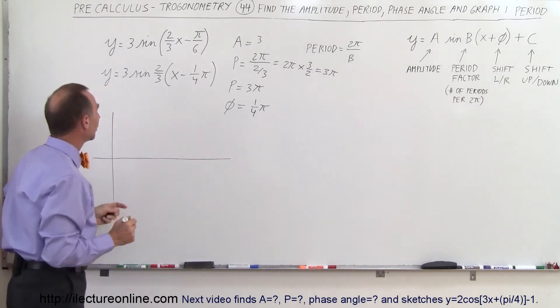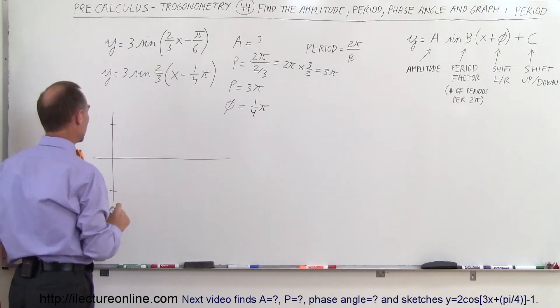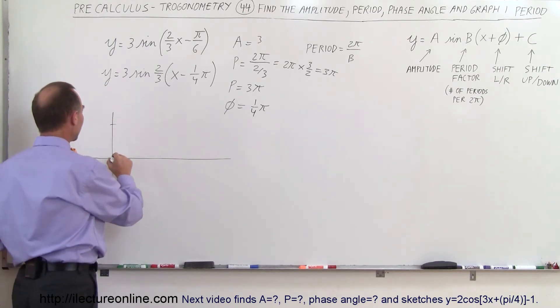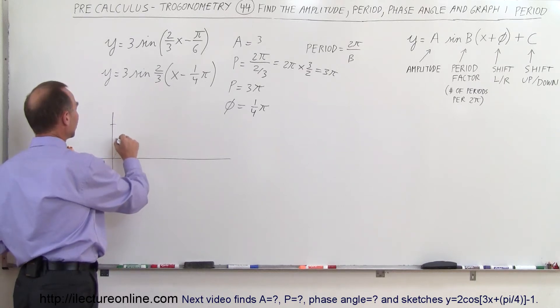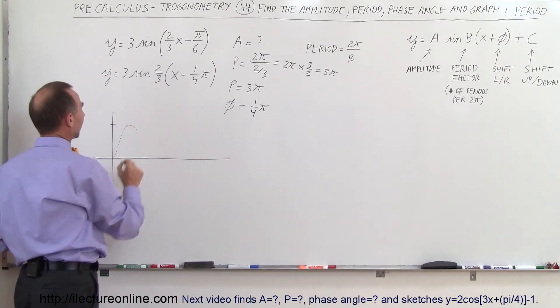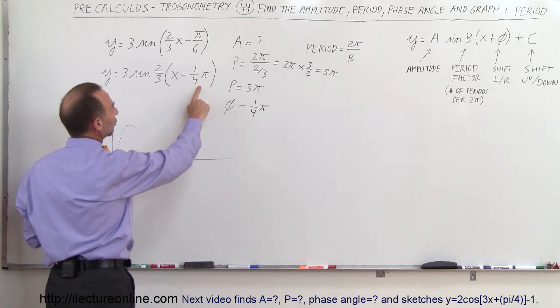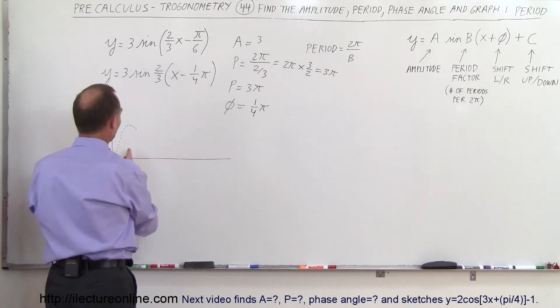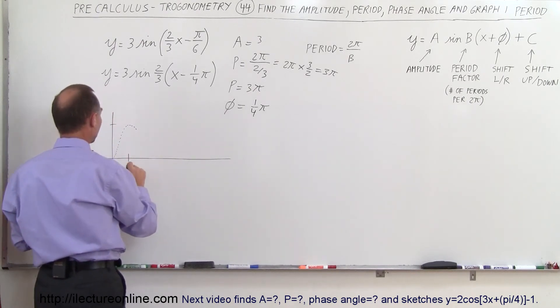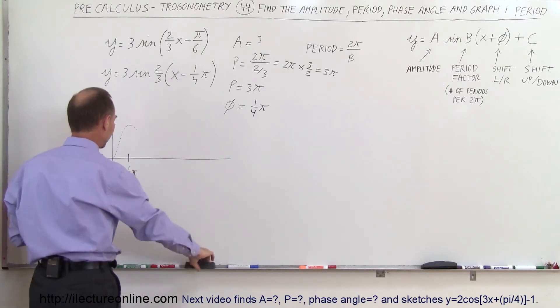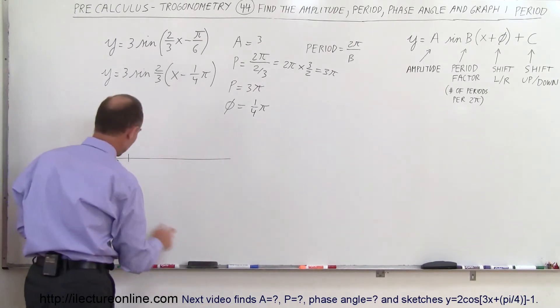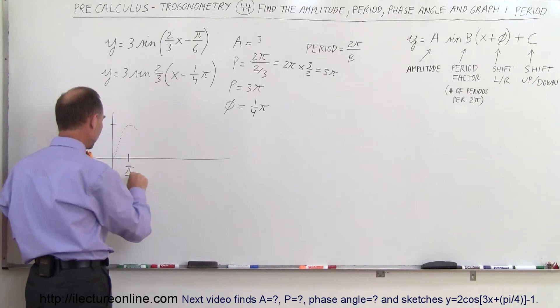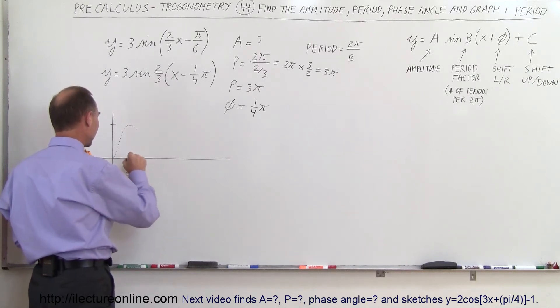Well, first of all, the amplitude will be three. Normally, the sine would start like this, right? This would be normally a sine function that would start like this, except it's being shifted to the right by one-quarter π. So we have to start over one-quarter π. So this is one-quarter π, or π over four. Sometimes it's just easier to write π over four, and so the sine function will start like this.